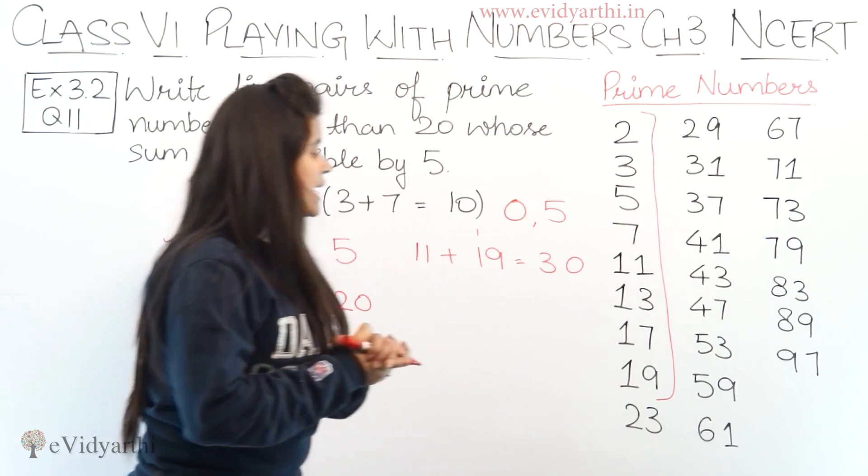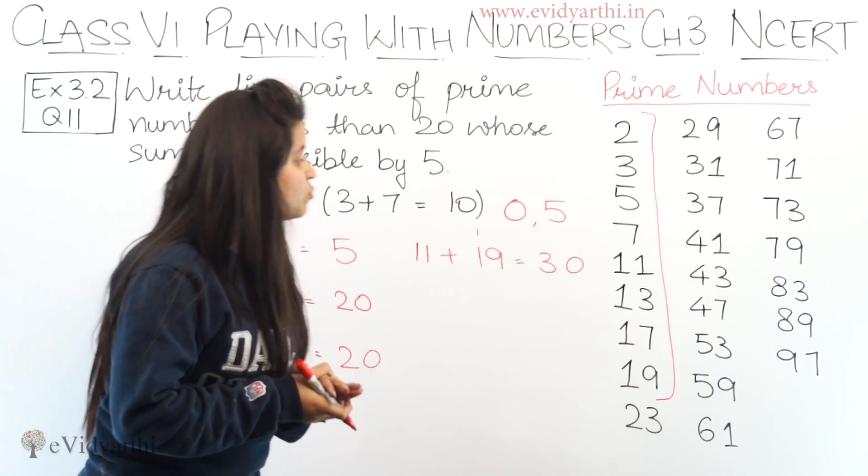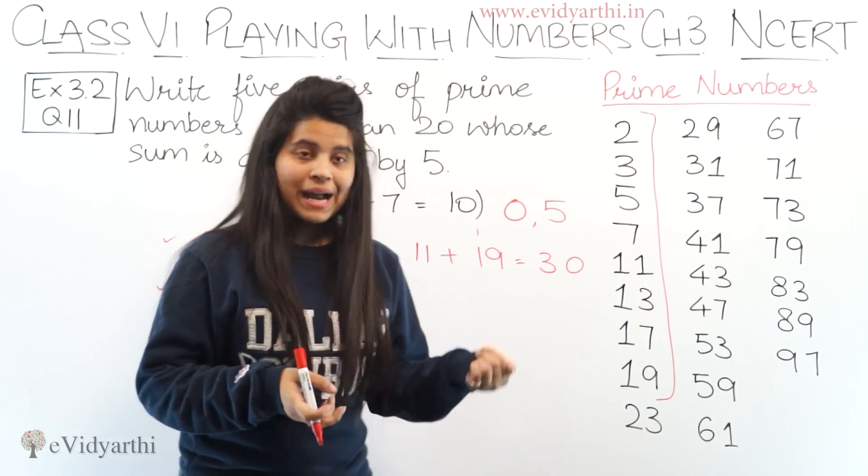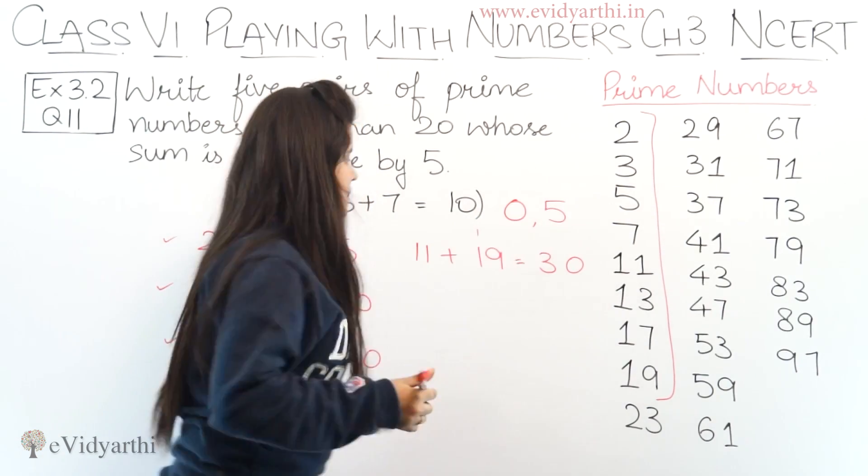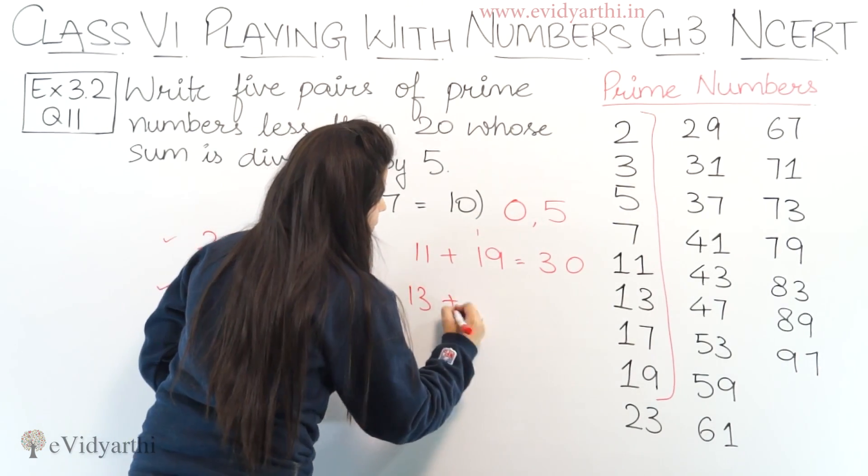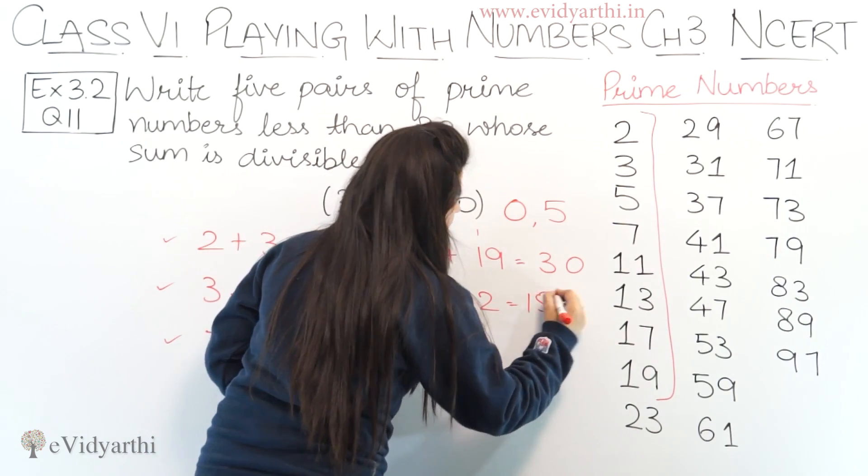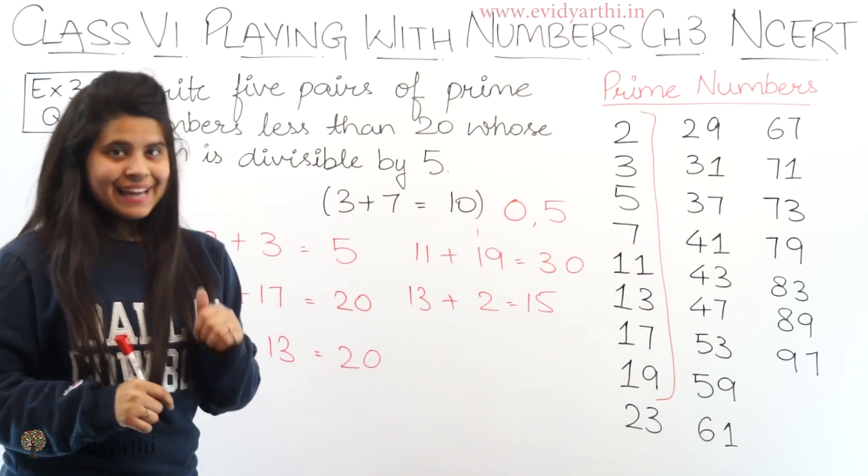Next let's go to 13. Now 13 has 3 at the end. So we need to make it 5. So we can add 2 to it. So we can add 13 and 2. So 13 plus 2 will be 15 and 15 comes in the 5 times table.